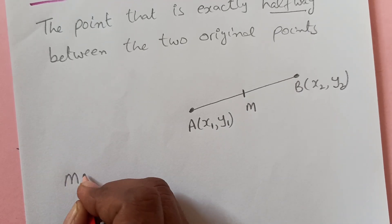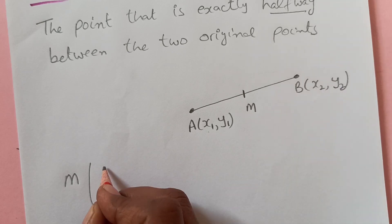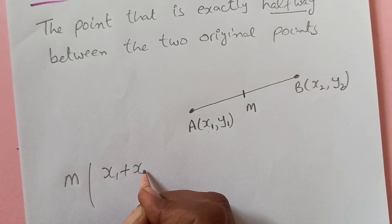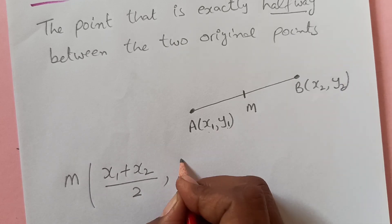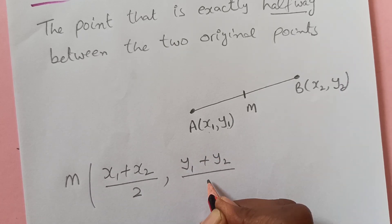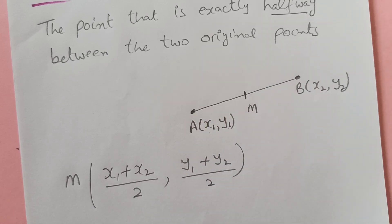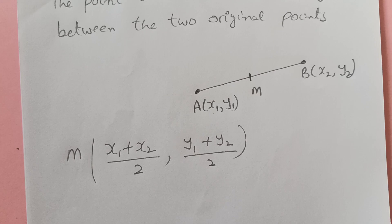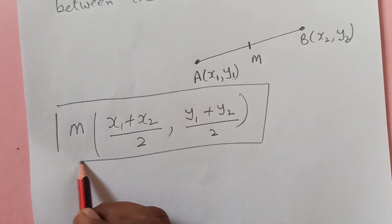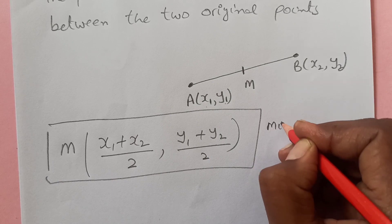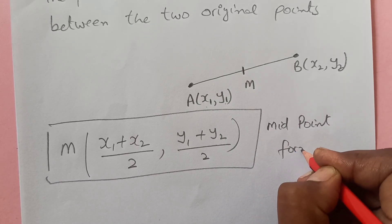It is simple — the coordinates of M will be x1 plus x2 over 2, and y1 plus y2 over 2, because we are looking for a point which is halfway between A and B. In this way we can find out easily the midpoint. This is also called the midpoint formula.